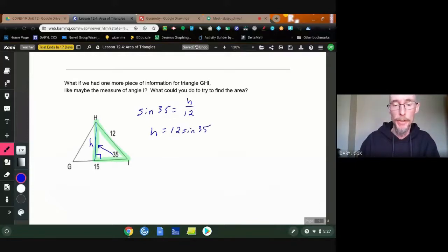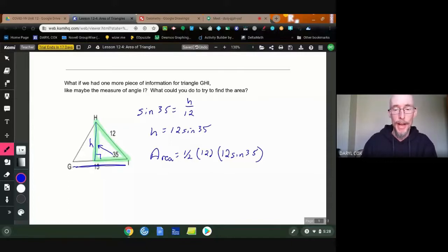Now that I know the height, I can go to my area formula. The area equals one half the base. Now remember the base is the entire base here. So that's 15 times the height, which I just found to be that. Now things are coming together. I could use my trig to help me find that.